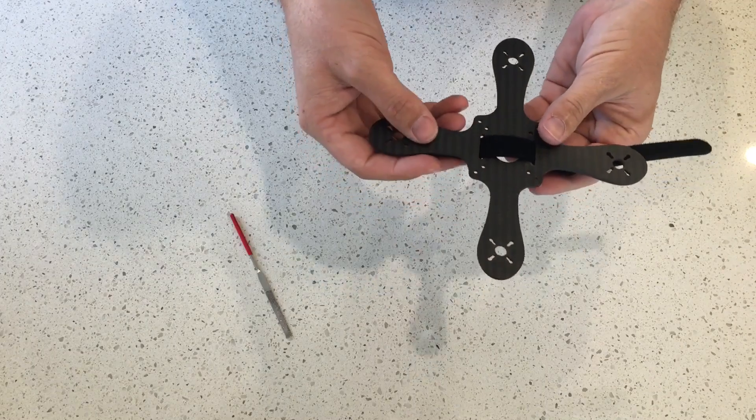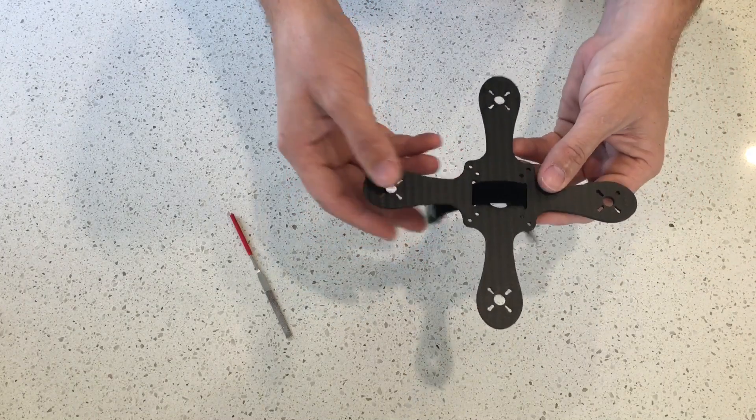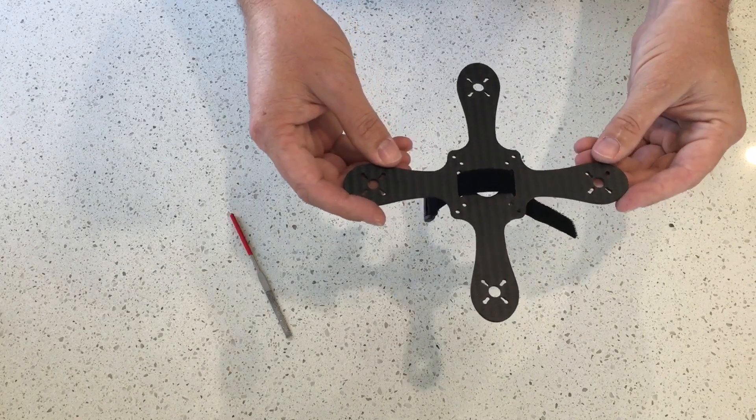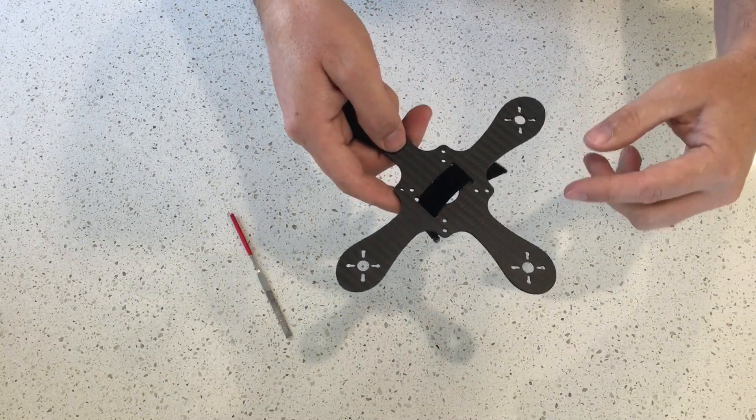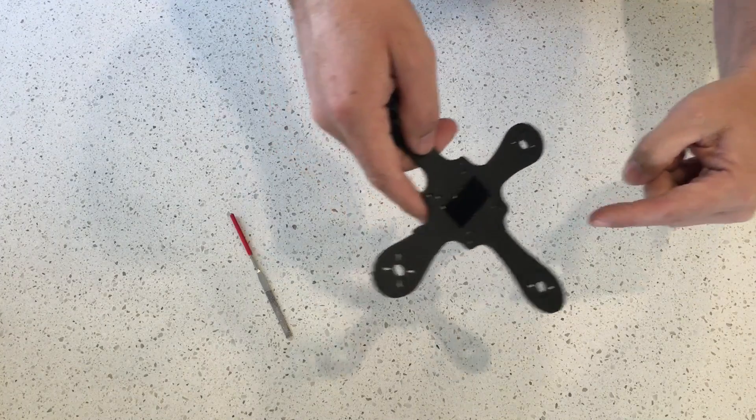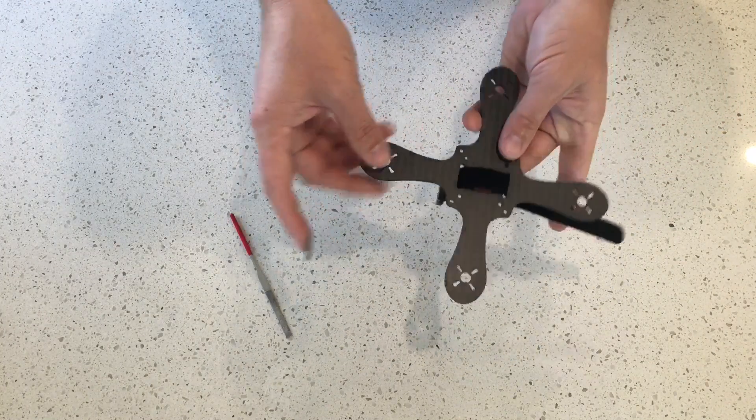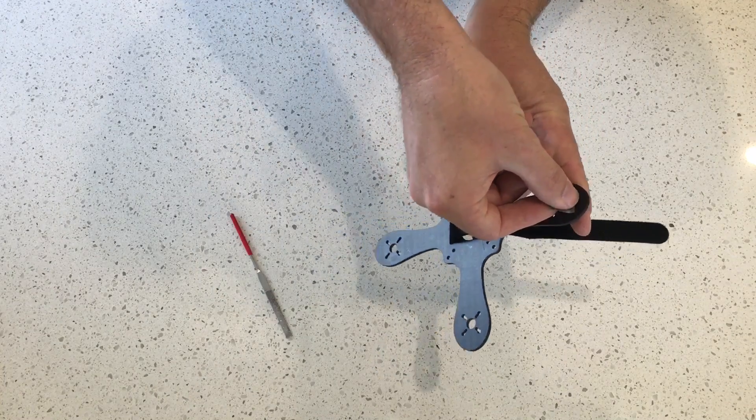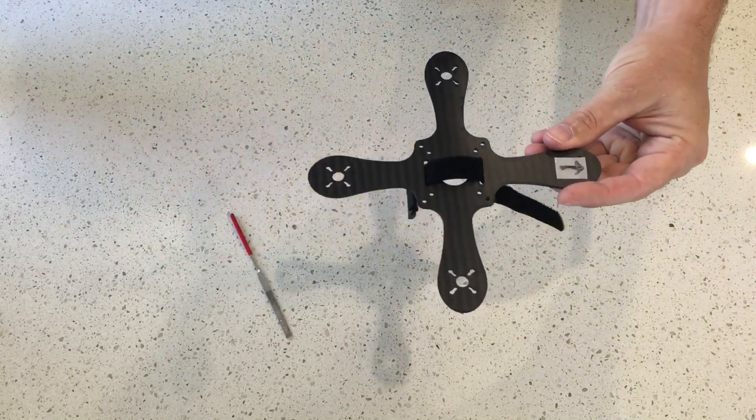The next thing is to determine where the front of the quad is. So being a plus style quad, the flight is led by an arm rather than an imaginary point between two arms like it is on an X quad. So if I decided that this arm would be the leading arm, so pointing in the direction of flight, I take the battery and I hold that under there.